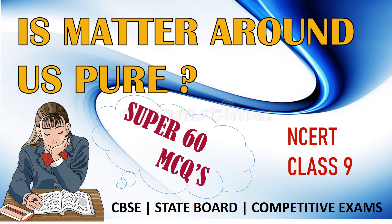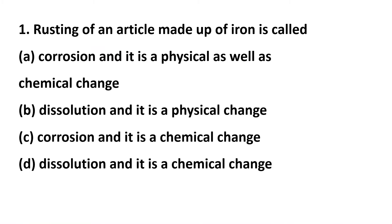Hi everyone, welcome to my channel. In this video we discuss a few important multiple choice questions from the topic 'Is Matter Around Us Pure' - Class 9. Let's start the first question: rusting of an article made up of iron is called...